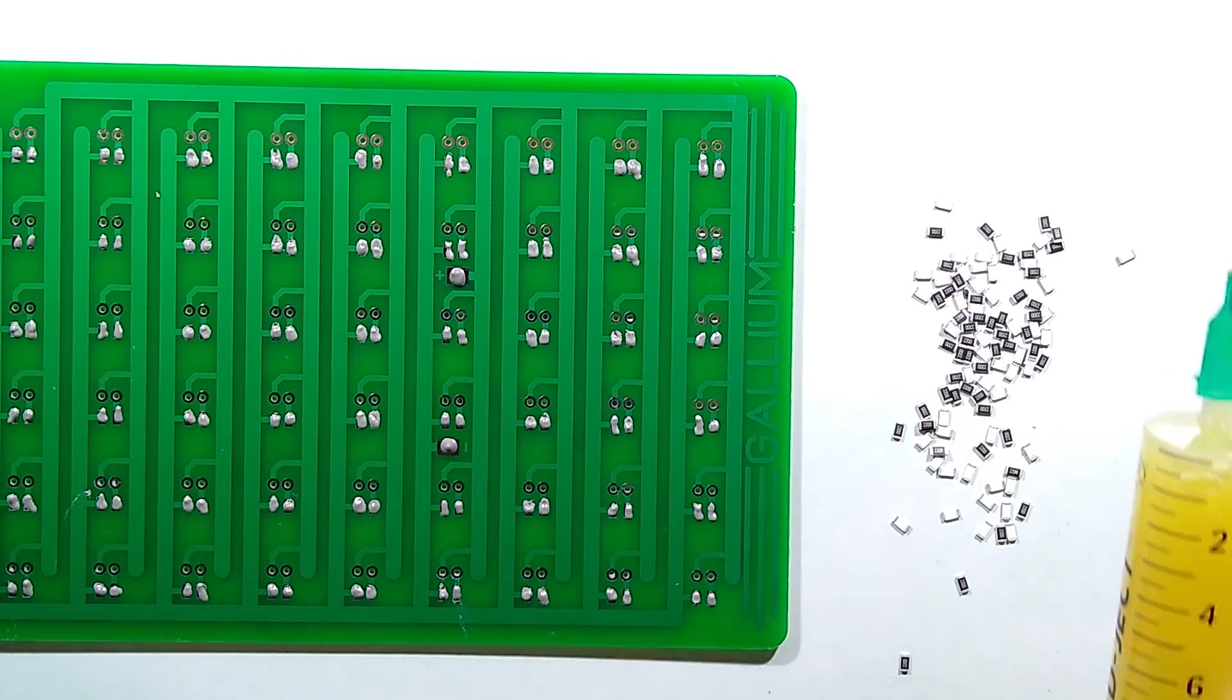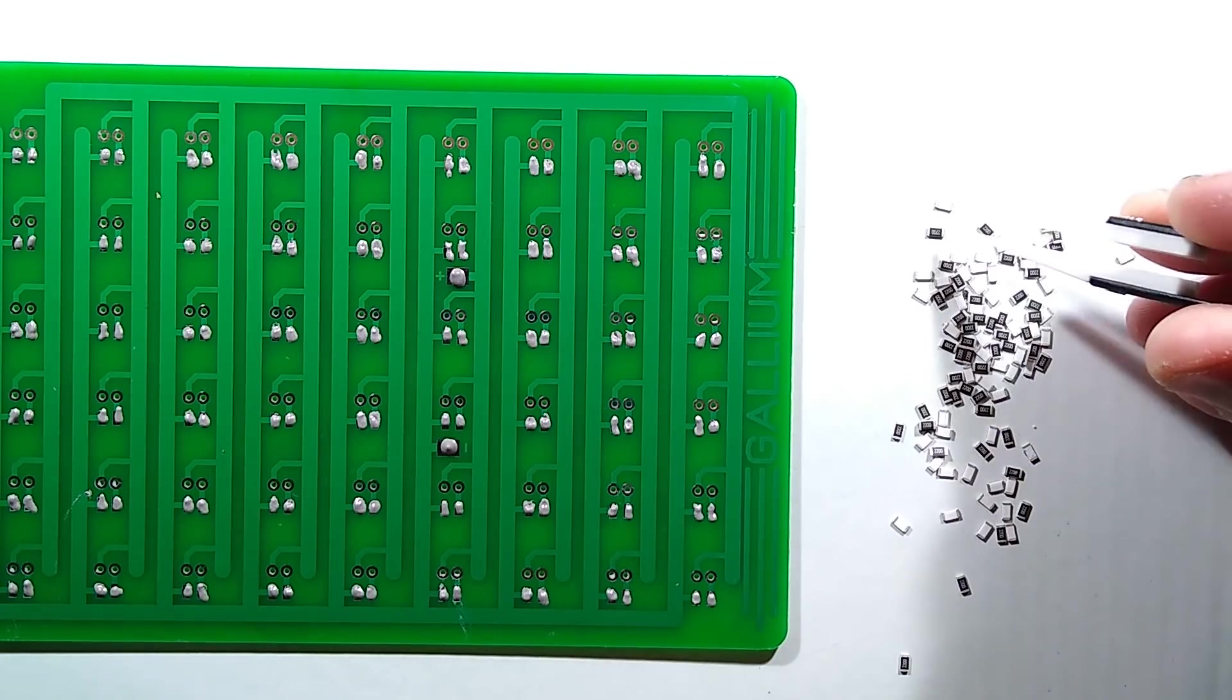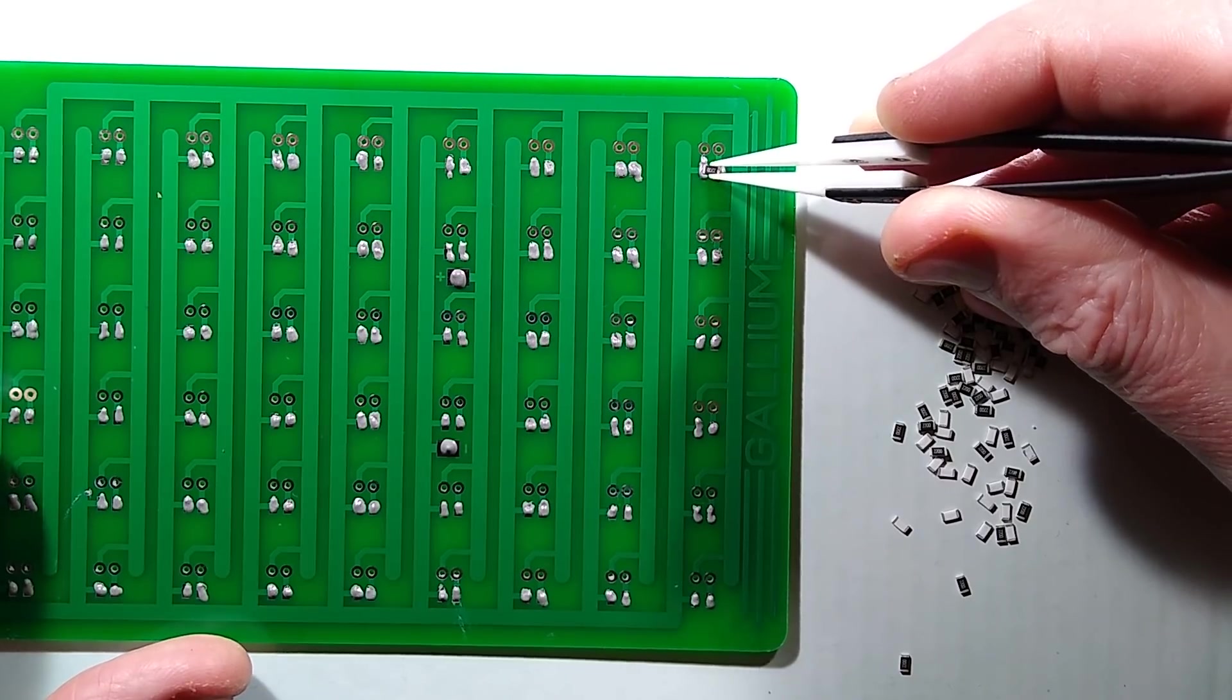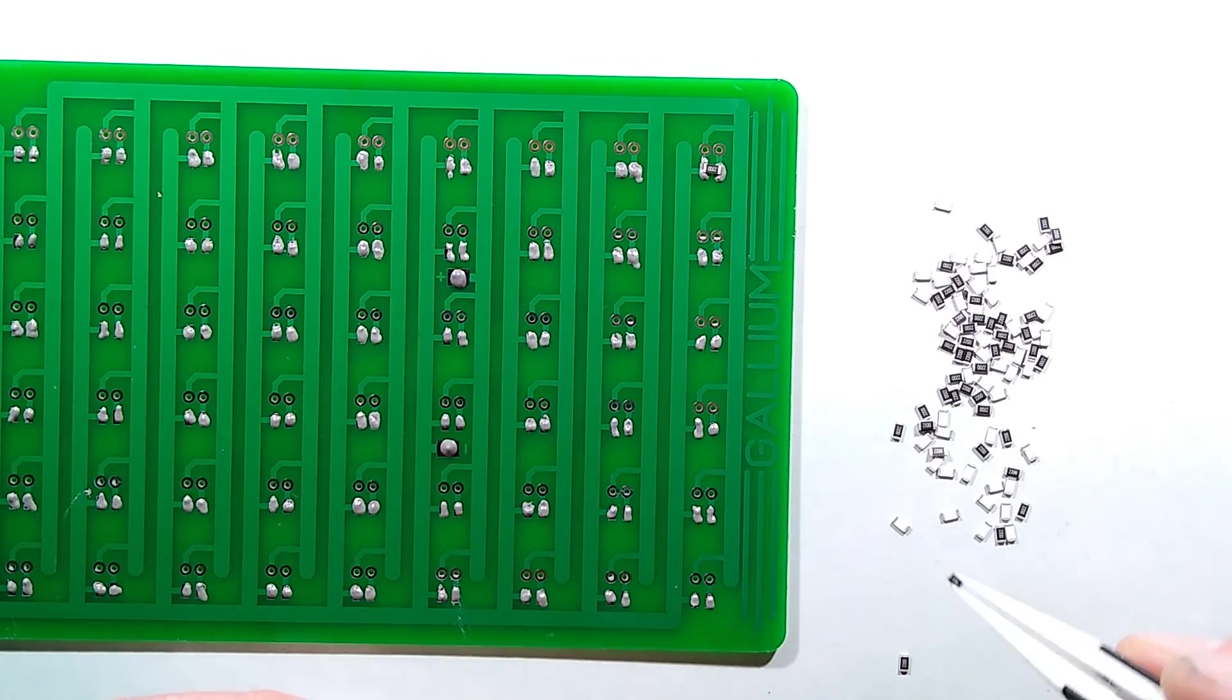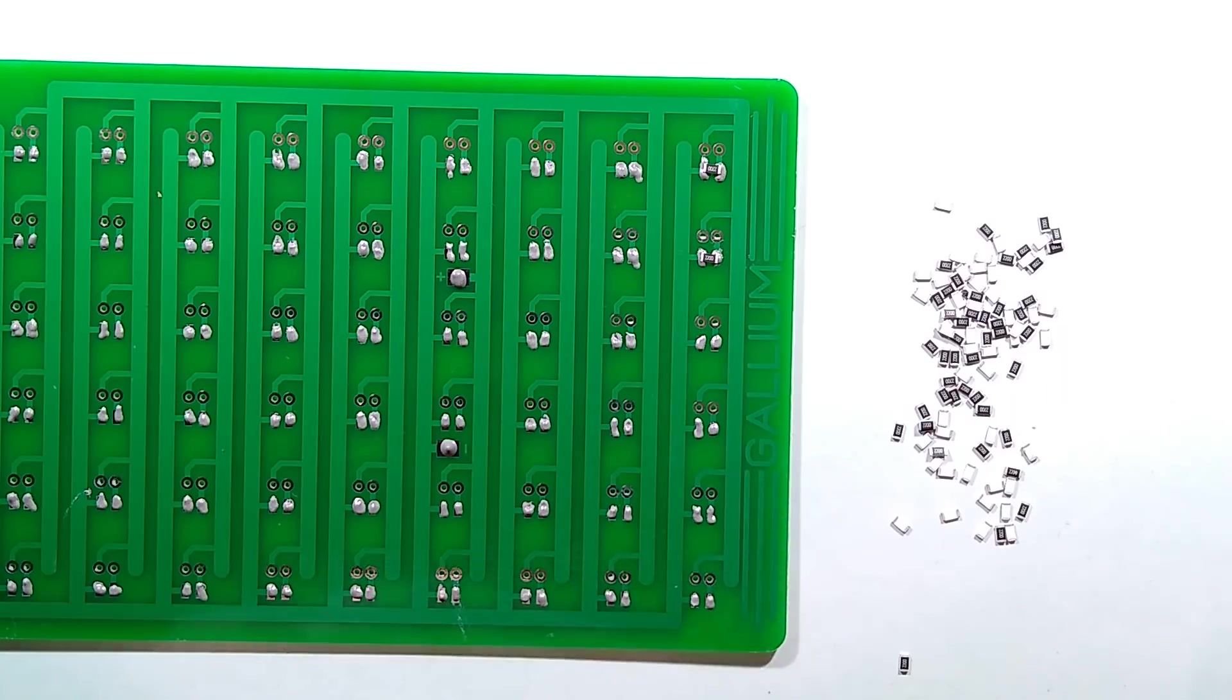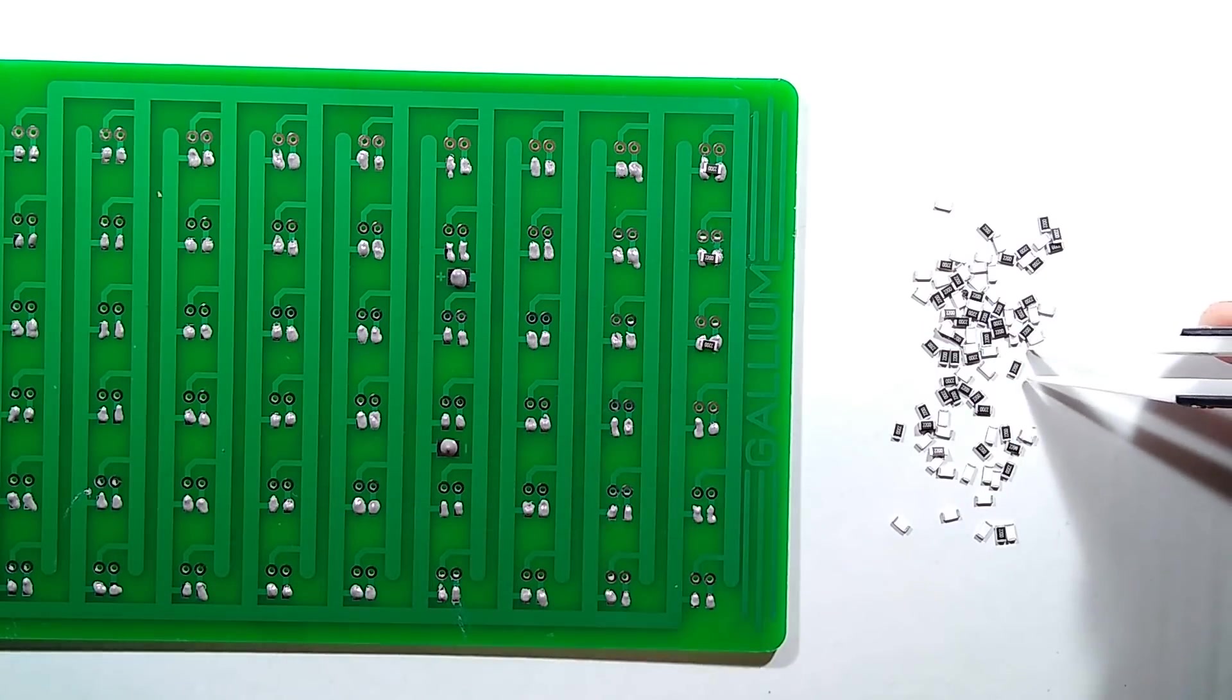The solder paste has been applied. I've got 220 ohm resistors and I'm going to start placing them on the pads here, making sure the tips of the tweezers don't get too sticky. I'll get them roughly in place. Theoretically they're going to pull themselves into position once I flow this on the hot plate.